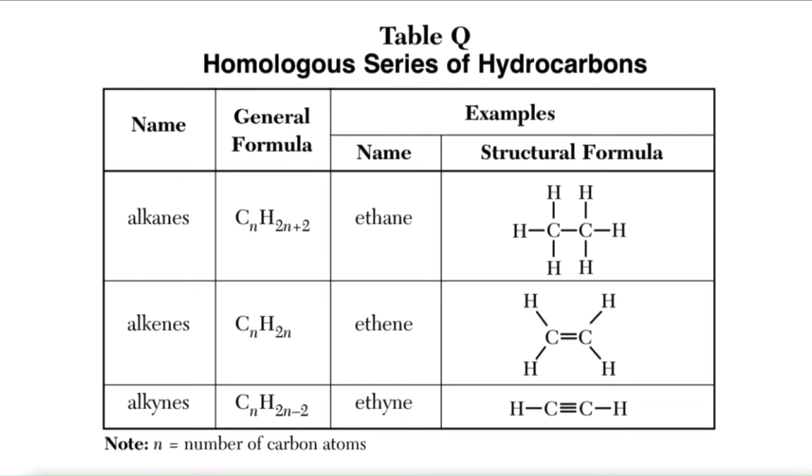The examples that are shown in Table Q are showing ethane, which is an alkane with two carbons, ethene, which is an alkene with two carbons double bonded together, and ethyne, which is an alkyne with two carbons triple bonded together. These are the simplest alkenes and alkynes.